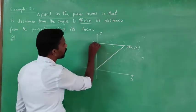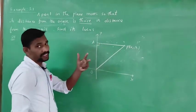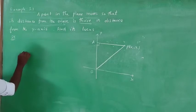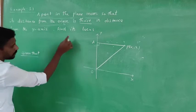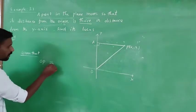Thrice means three times. So given that distance from the origin OP equals three times the distance from the y-axis.